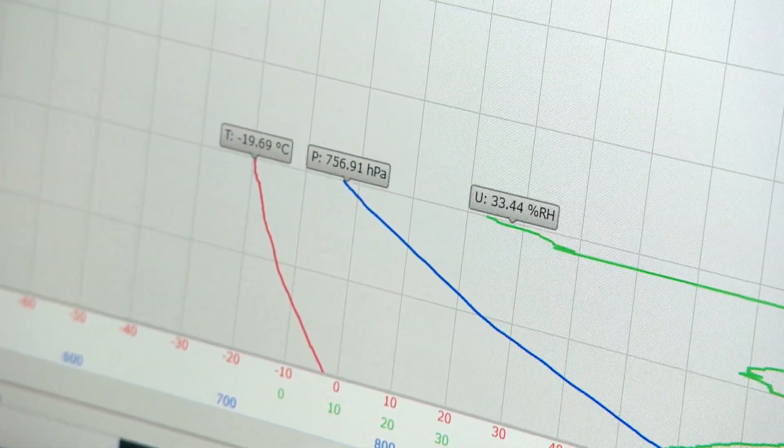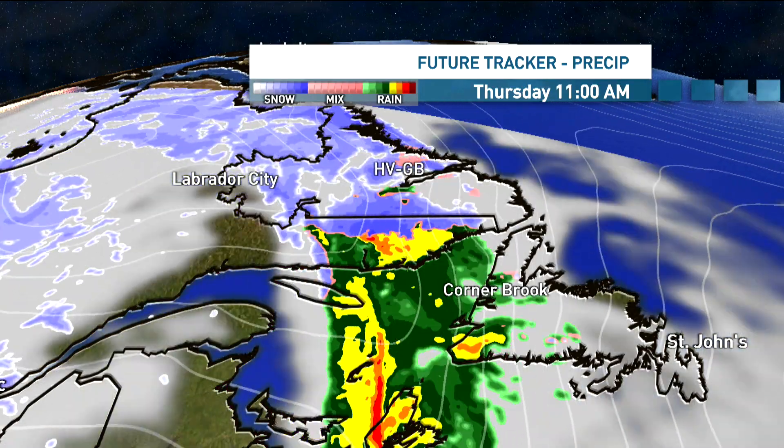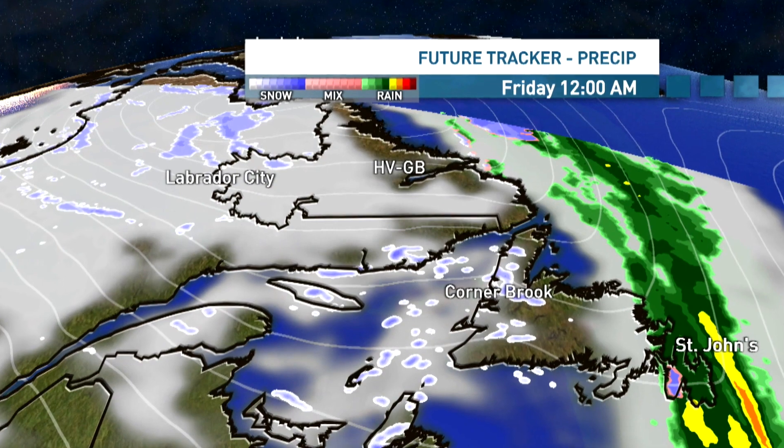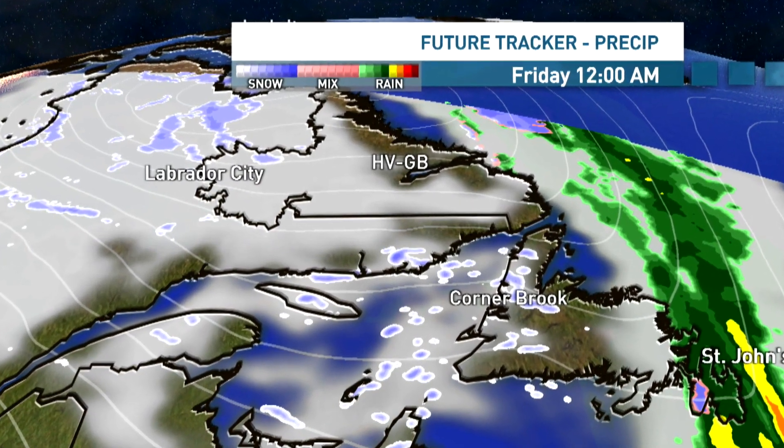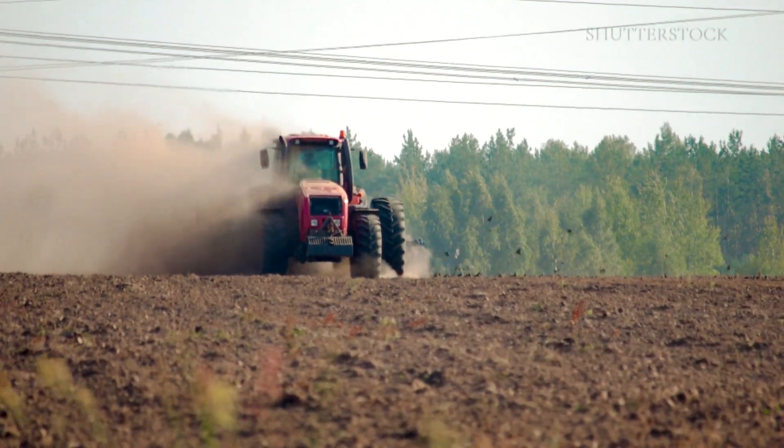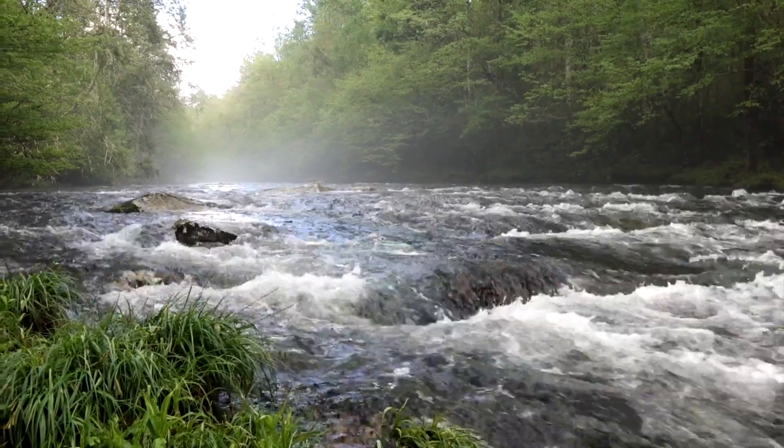So all of this data here gets put into supercomputers that use complicated mathematical equations that create the weather models that I use every single day. They're also used for things like drought conditions to monitor drought conditions, potentially air quality, as well as river levels.